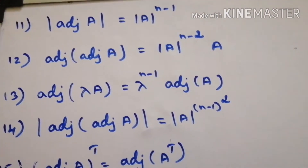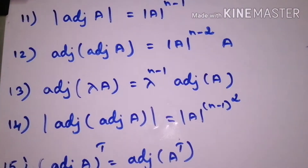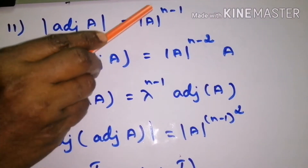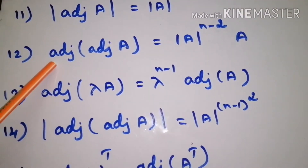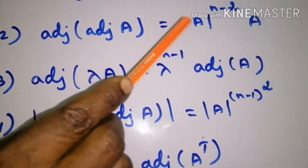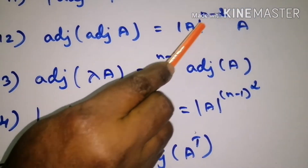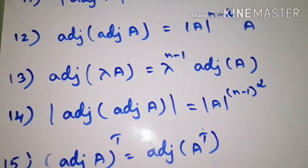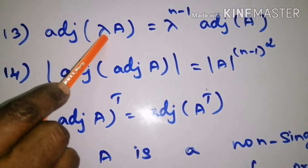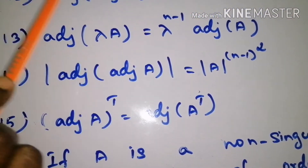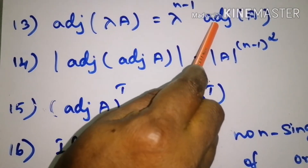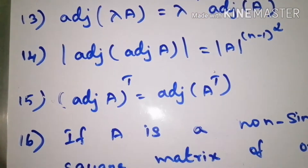Determinant of adjoint of A is equal to determinant of A power n minus 1. Adjoint of adjoint of A is equal to determinant of A power n minus 2 into A. Adjoint of lambda A is equal to lambda power n minus 1 into adjoint of A.